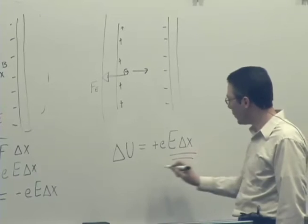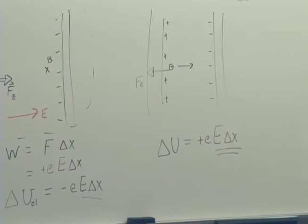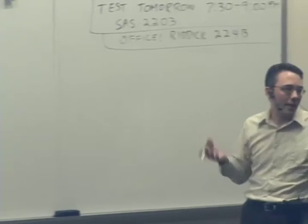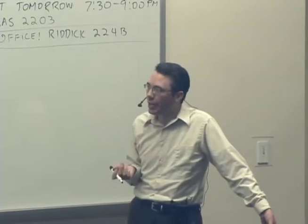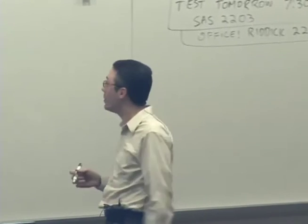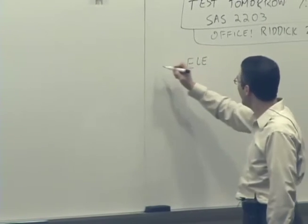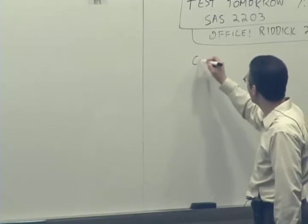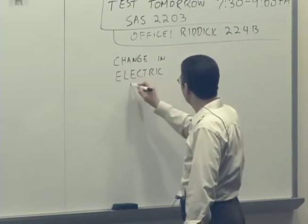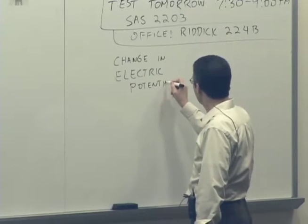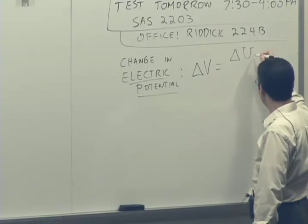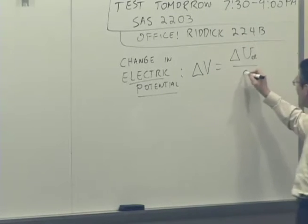In both of these cases we have this factor of the electric field times a change in position, and the only difference is the sign. So it's useful to divide out the charge dependence and just look at a change in potential energy per unit charge, because if we have it per unit charge then we can generalize it to any charge moving between those same two positions. So we define what we call electric potential, or really the change in electric potential. We'll just be dealing with changes for right now.